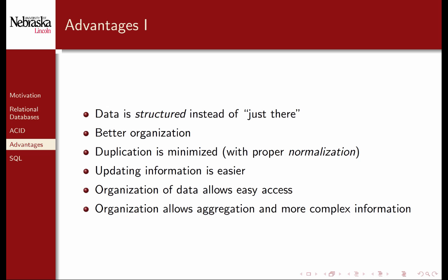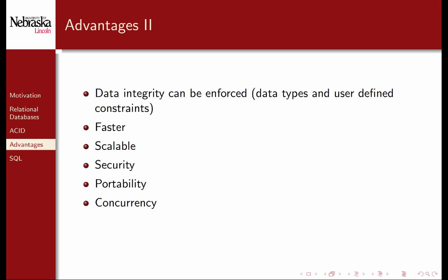Relational database systems have several clear advantages. The data is structured and organized rather than just being stored as in a flat file. Good relational design, using normalization, means that duplication and replication of data is minimized. Updating, accessing, and aggregating data is easier and more straightforward through the use of structured query language. Moreover, all of the problems we observed with the flat file are now solved. Data integrity can be enforced through the design of tables and use of constraints. Relational database management systems are faster and more scalable, offer security features and portability across different types of systems, and provide concurrency for multiple threads and applications.